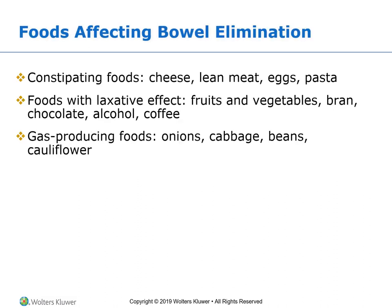The type and amount of food we eat can affect elimination. We need a high-fiber diet — about 25 to 30 grams of fiber — along with a daily fluid intake of 2,000 to 3,000 mLs. High-fiber foods include whole grains, bran, dried peas, beans, fresh fruits, and vegetables, which increase bulk in fecal matter and cause more regular peristalsis. Foods that constipate include cheese, lean meats, eggs, and pasta. Foods with a laxative effect include fruits, vegetables, bran, chocolate, alcohol, and coffee. Foods that produce gas include cabbage, onions, beans, and cauliflower.